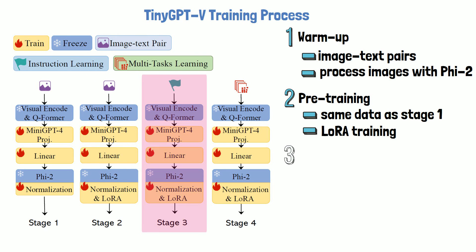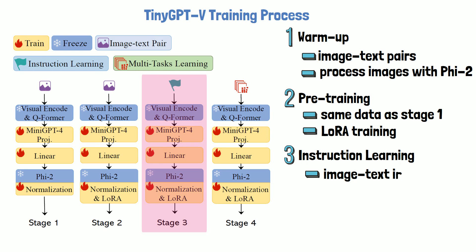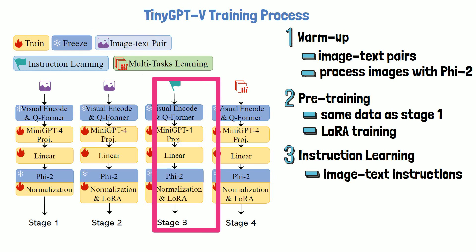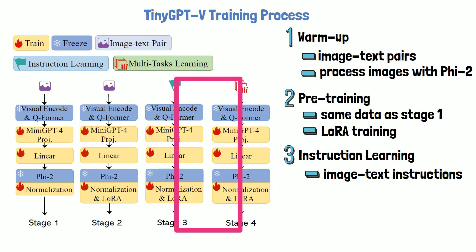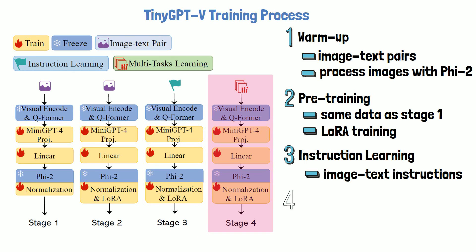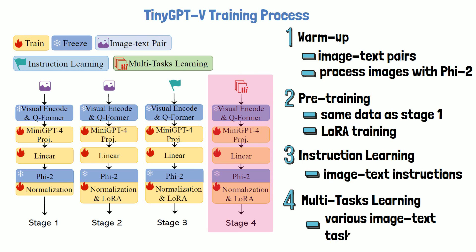The third stage is instruction learning, where the model trains on instructions containing both images and text. The researchers use examples from MiniGPT-4 data and continue training the trainable components on such instructions. The fourth and final stage is multi-task learning, where the model is trained on multiple datasets covering various vision-language tasks.